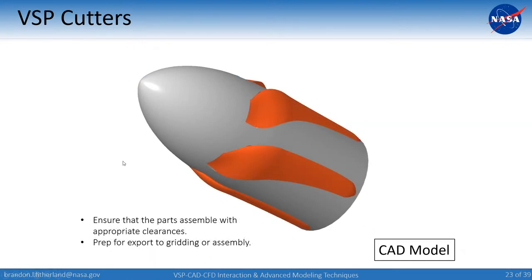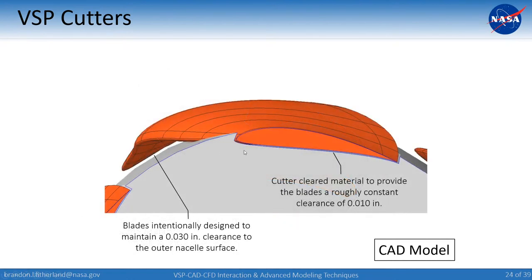All of the blades from VSP nestled perfectly in these cutout regions because that's what they were designed to do. Zooming in, the cutter parts left a ten-thousandths-of-an-inch constant distance from the lower surface of the blade where they touch, and maintained a 30-thou clearance at the back. So these cutter components not only clear material away but do so very accurately.